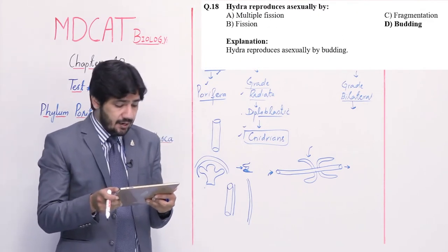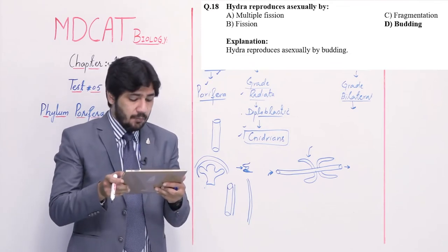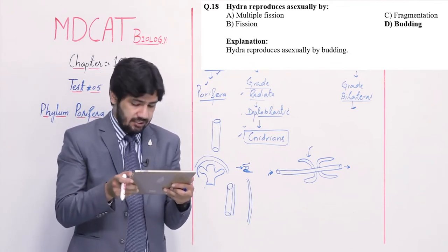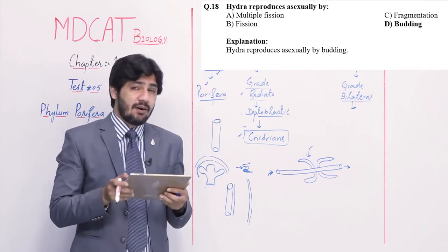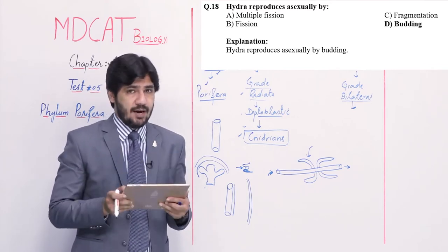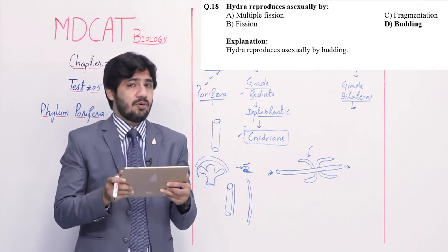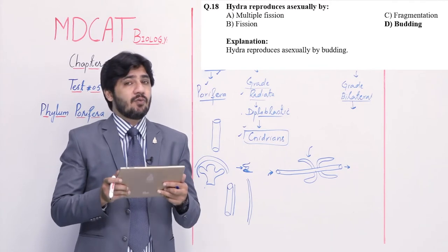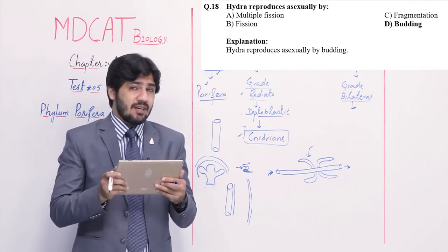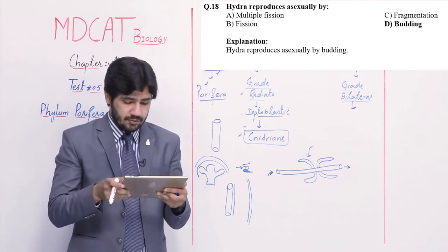Question number 18: hydra reproduces asexually by — alpha multiple fission, beta fission, charlie fragmentation, and delta budding. Hydra's reproduction is both sexual and asexual. Sexually, hydra is hermaphrodite. When it reproduces asexually, budding occurs. So right option is delta — budding.